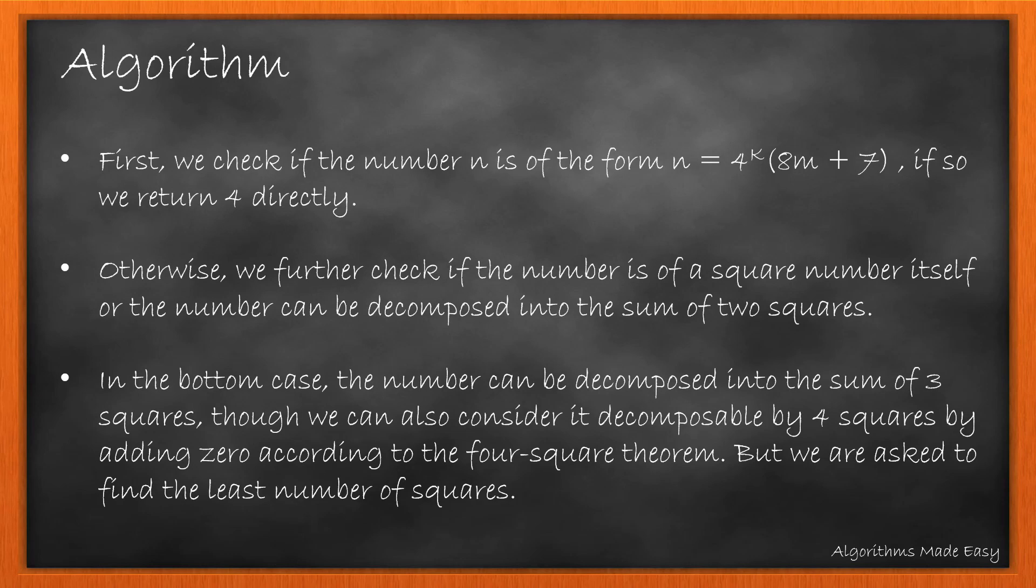First we check if the number n is of the form; if so we return 4 directly. Otherwise we check if the number is a square number itself or the number can be decomposed into the sum of 2 squares. In the bottom case the number can be decomposed in the sum of 3 squares.